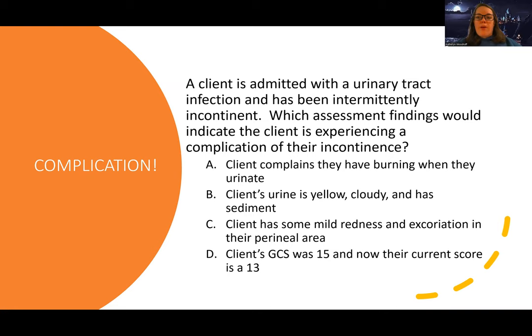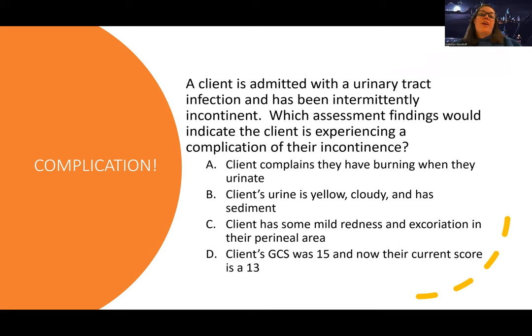Let's do a practice question. A client is admitted with a urinary tract infection — and don't worry, we haven't talked about those yet, but the question might not be about what you think it is. Read the whole question before you freak out. A client admitted with a UTI has been intermittently incontinent. Which assessment finding would indicate the client is experiencing a complication of their incontinence? This question is not asking anything about the UTI — it's asking how you know there's a complication of their incontinence.